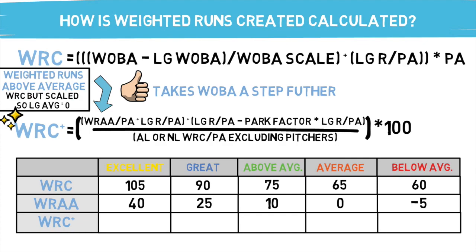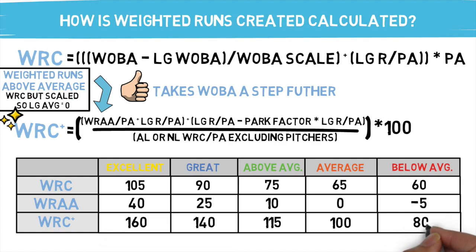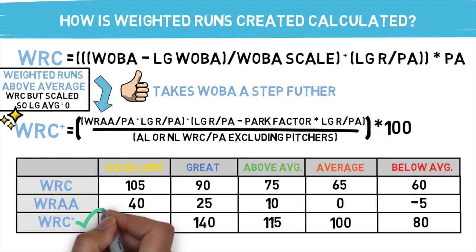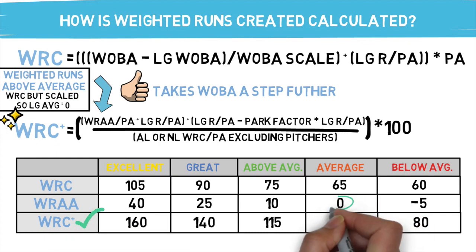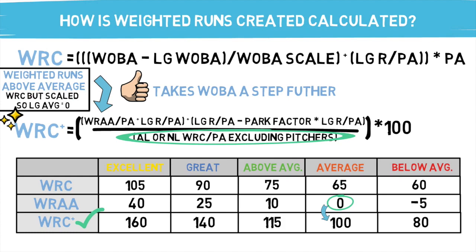Finally, we get to my favorite version of runs created: weighted runs created plus. Your average for this number falls at 100, and you may notice that as you get into the higher ranges, the jumps between ranges get larger compared to the last two stats. This is because, unlike weighted runs created and weighted runs above average, this equation is calculated completely differently. This is the most all-encompassing, easy-to-read statistic of the bunch. It takes a similar approach to weighted runs above average, where the stat is set to an easy-to-read benchmark number — 100 — but it also takes into account the league and park factors.